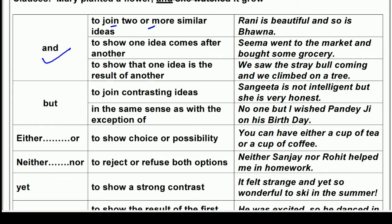The first use of 'and' is to join two or more similar ideas — that is, sentences of the same kind. For example, 'Sema went to the market and bought some grocery.' Here two ideas are joined into one sentence using 'and' — Sema went to the market and she bought some grocery, so two sentences become one.